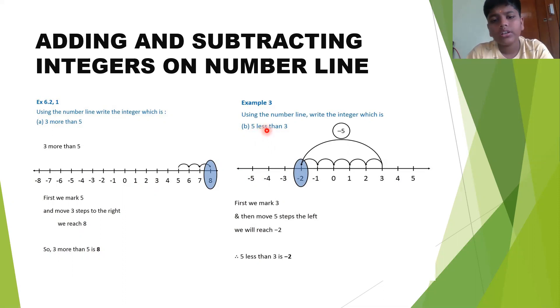Here, 5 less than 3 means 3 minus 5. Here there is subtraction, so we should move back 5 steps. Starting at 3, we move back: 1, 2, 3, 4, and 5. Finally we reach minus 2.